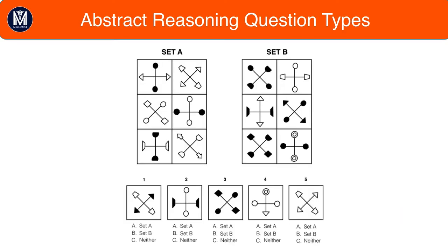So type one questions give you two sets, set A and set B. Set A has one rule between all six boxes and set B has another rule between all six boxes. All the boxes in set A have to fulfill the rule bar none and same for set B.